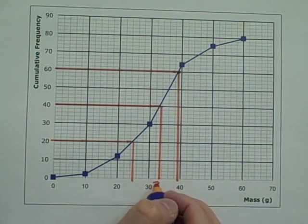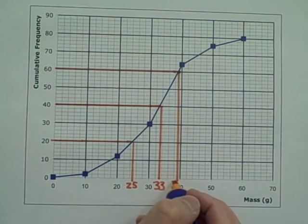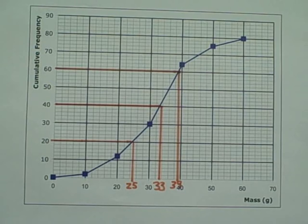Reading the values off the graph, the median is 33, the lower quartile is 25, and the upper quartile is 39. Note that these are all estimates, and a little bit of leeway will be given. Recall that the interquartile range is the difference between the lower and upper quartiles. So in this example it is 39 minus 25, which is 14.